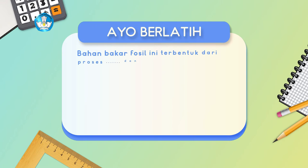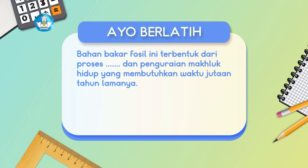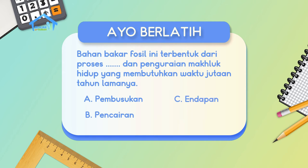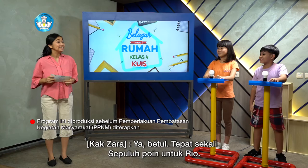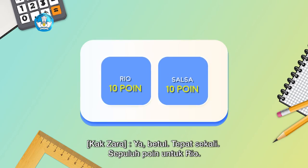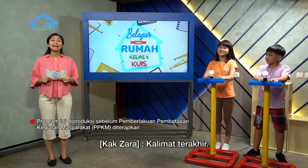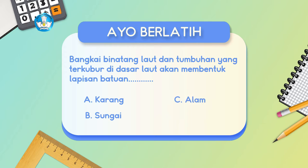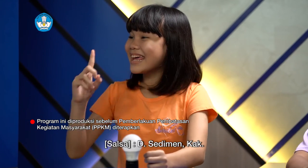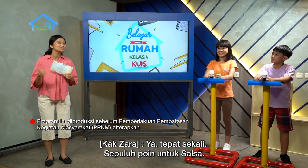Kita ke kalimat yang ketiga. Bahan bakar fosil ini terbentuk dari proses titik-titik dan penguraian makhluk hidup yang membutuhkan waktu jutaan tahun lamanya. A, pembusukan. B, pencairan. C, endapan. D, pemadatan. Rio menjawab: A, pembusukan. Betul banget, 10 poin buat Rio! Kalimat terakhir: bangkai binatang laut dan tumbuhan yang terkubur di dasar laut akan membentuk lapisan batuan titik-titik. A, karang. B, sungai. C, alam. D, sedimen. Salsa menjawab: D, sedimen, Kak. Tepat sekali! 10 poin buat Salsa.